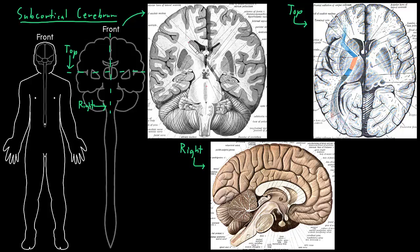One important subcortical white matter structure deep in the cerebrum is this band of white matter going between some of the gray matter nuclei that are deep in the cerebrum. The name of this subcortical band of white matter is called the internal capsule. On the top-down view, they've colored it in to show how axons course out connecting different areas of the cerebrum — it makes a V shape, separating some subcortical gray matter nuclei. The internal capsule contains important pathways including, quite importantly, the corticospinal tract containing the upper motor neurons.